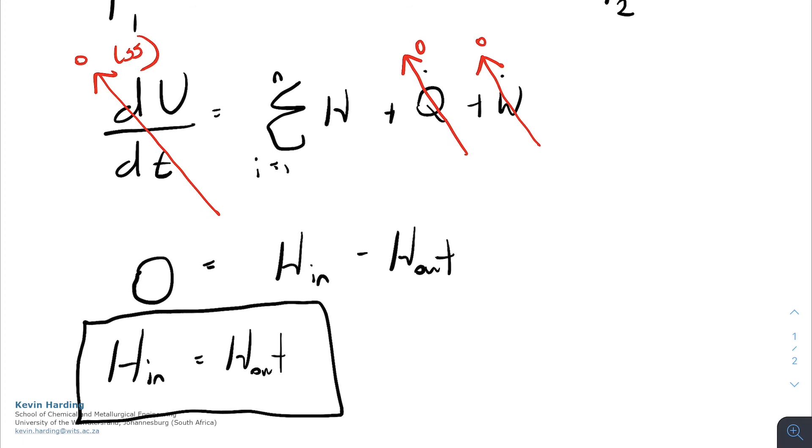So if I tell you in an exam—and this is a special case—that a system is a Joule-Thomson expansion, you can jump to the fact that H_in equals H_out because of the specific nature of that expansion valve.